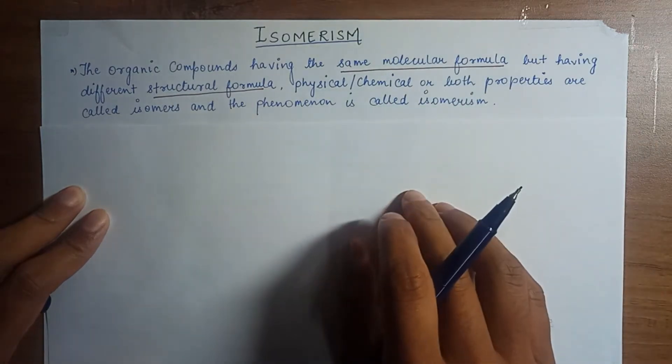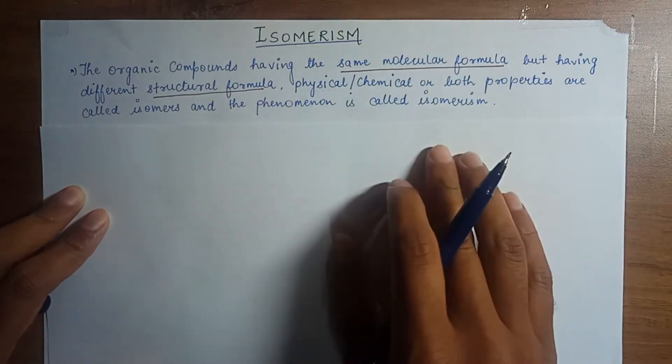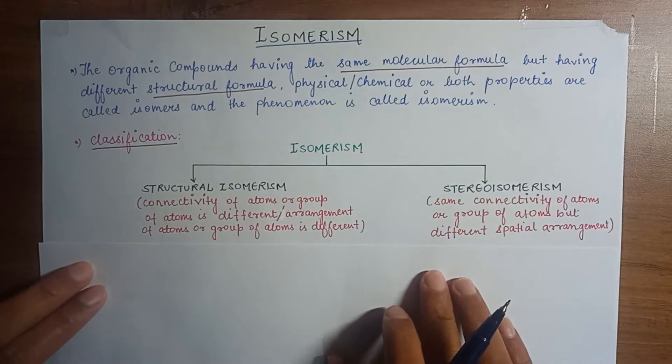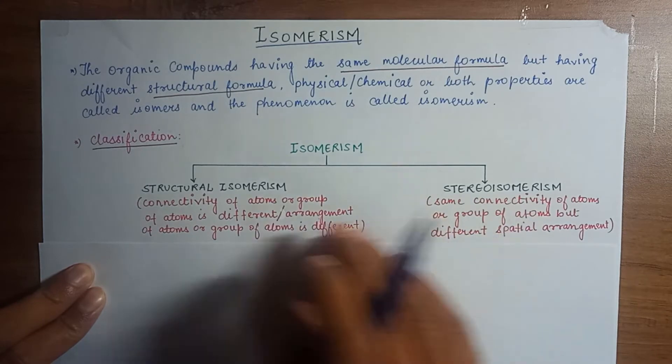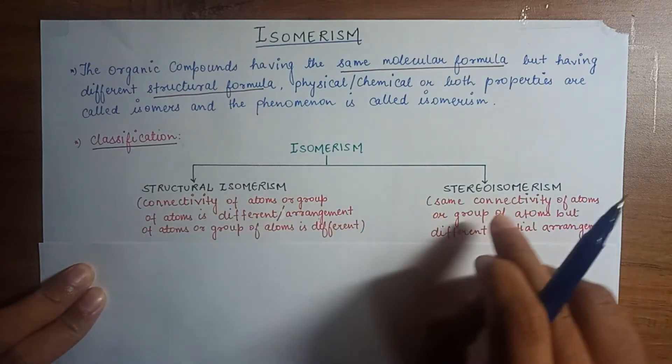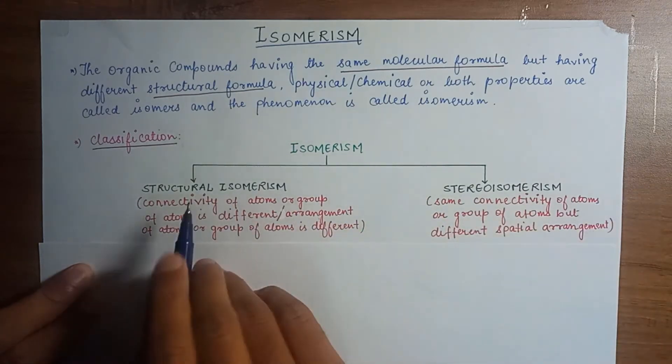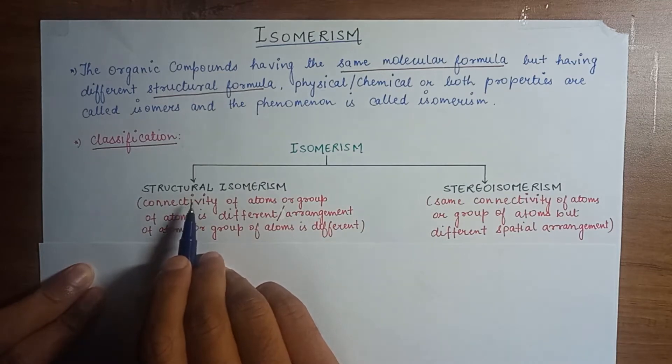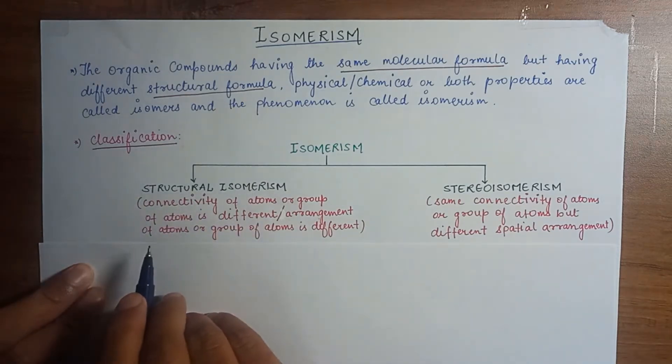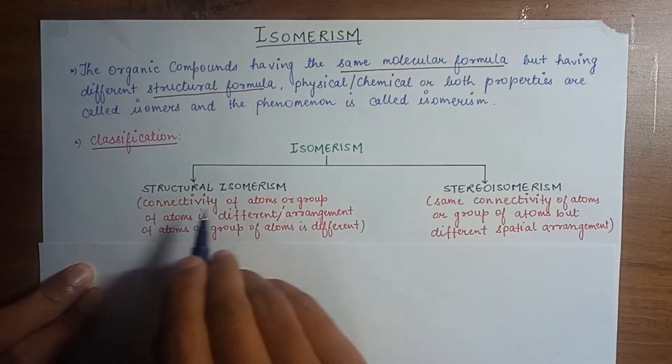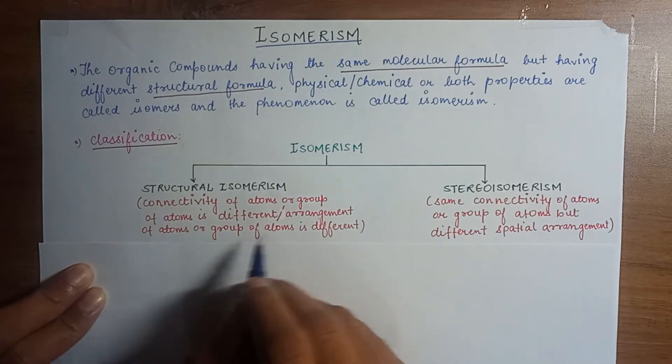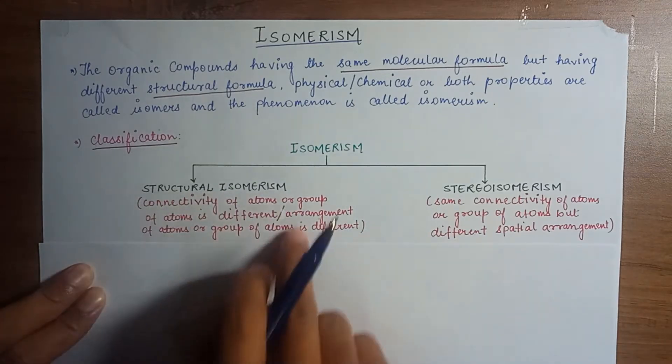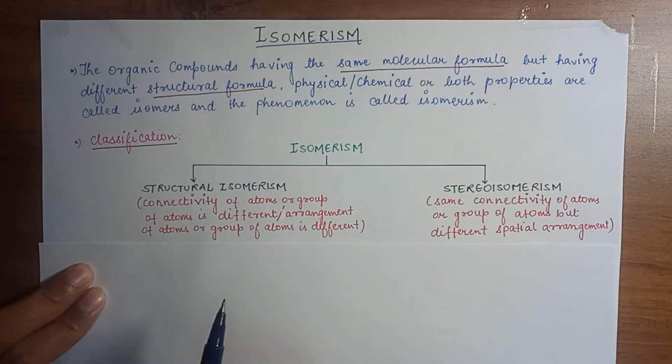Now we will see how isomers are classified. Isomerism has been classified into two categories: structural isomerism and stereoisomerism. So what are structural isomers? Structural isomers have the same molecular formula but connectivity of atoms or group of atoms is different, or arrangement of atoms or group of atoms is different. We will understand this concept by taking few examples.